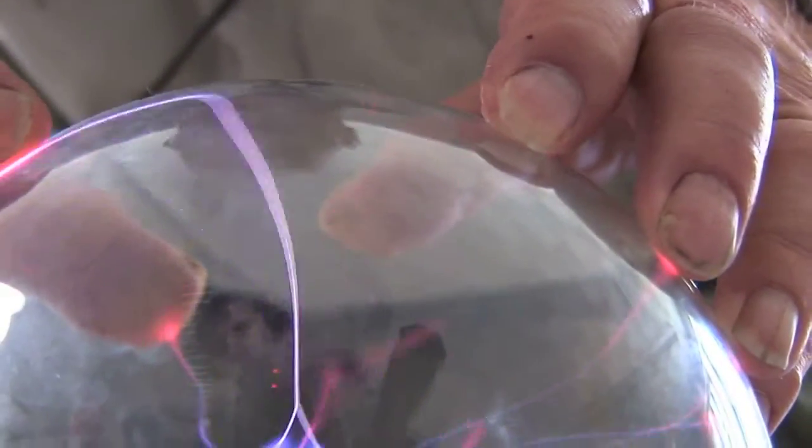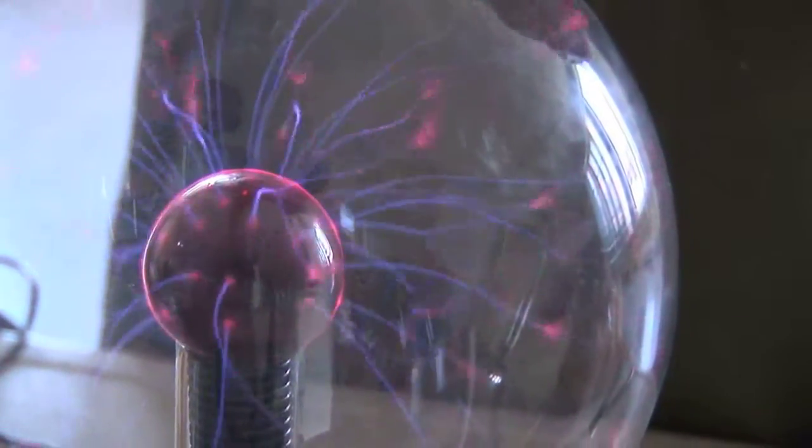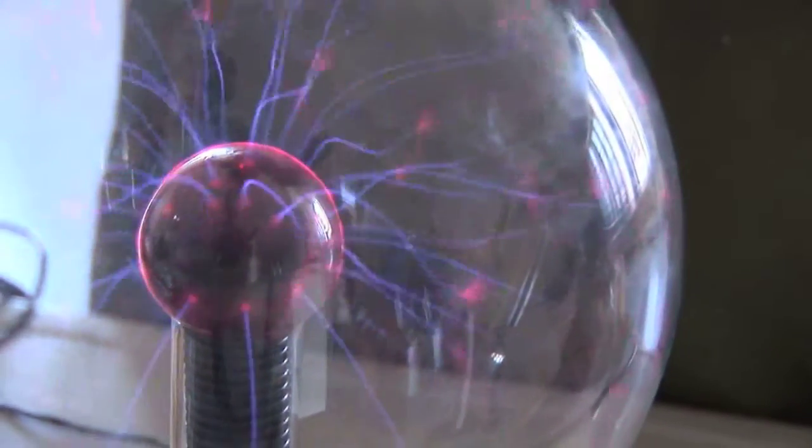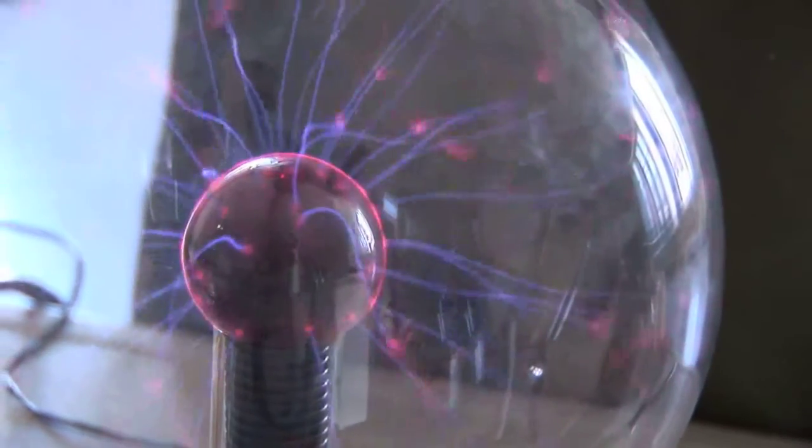And the electric field accelerates those molecules until they bang into each other and get into an excited state. And then, as the excited state collapses back down to the base state, it generates light.